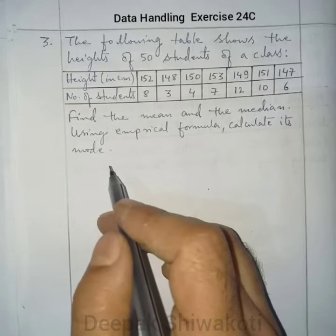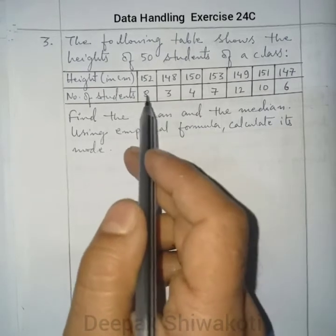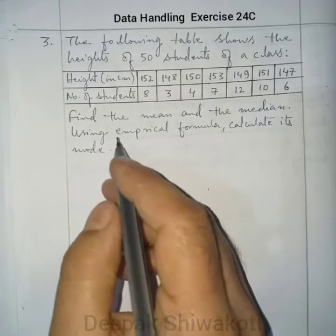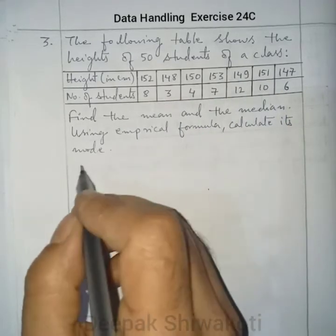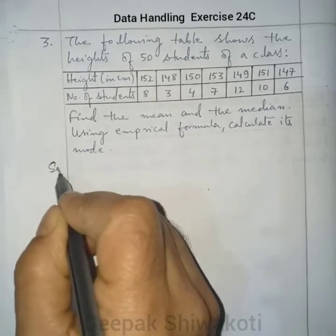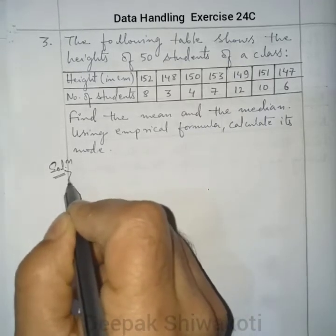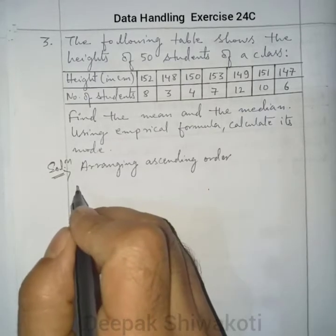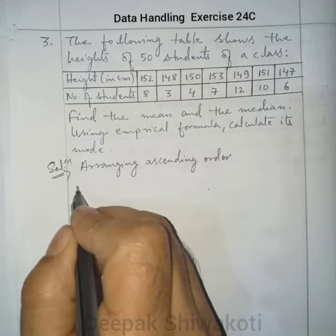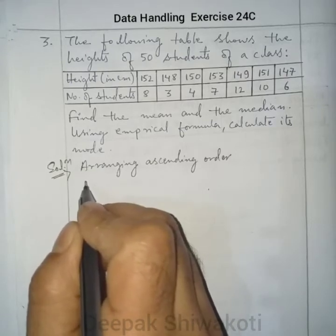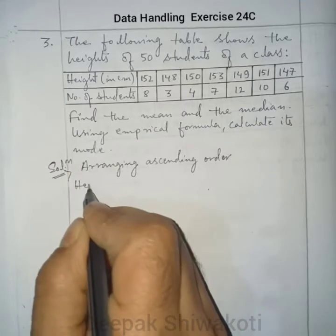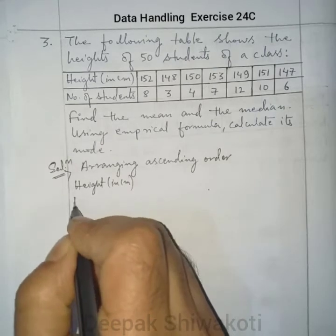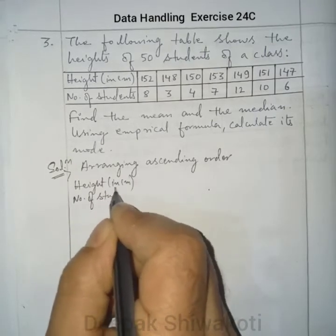First, we arrange the heights in ascending order and make a new frequency distribution. The solution involves arranging in ascending order with columns for height in centimetres and number of students.